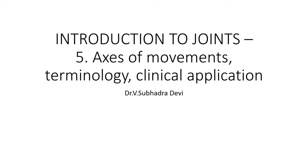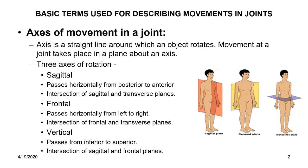Dear students, before we proceed with the clinical application of joints, let us consider the axis of movements and the terminology used while referring to the movements of joints. What is axis of movement? An axis is a straight line around which an object rotates.